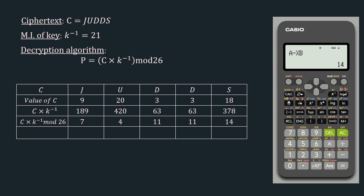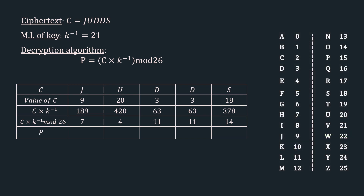Using a scientific calculator really makes our job easy. The last row is p, the plain text. Referring to the mapping table: 7 = h, 4 = e, 11 = l, 11 = l, 14 = o. We have retrieved our plain text 'hello'. We have successfully encrypted 'hello' and decrypted it back. This was all about multiplicative cipher. In the next video, we will cover the affine cipher. Thanks for watching — please comment, like, share, and subscribe to the channel for more such videos.